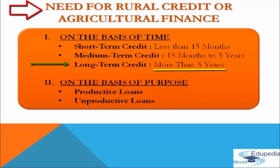The third category is long-term credit. It refers to credit taken to meet long-term needs for a period of more than 5 years, and may extend to a period of 15 to 20 years. Such loans are repaid over a long period of time. Long-term loans are needed for making permanent improvements on land, digging tube wells, purchase of larger agricultural implements and machinery like tractors and harvesters, and repayment of old debts.